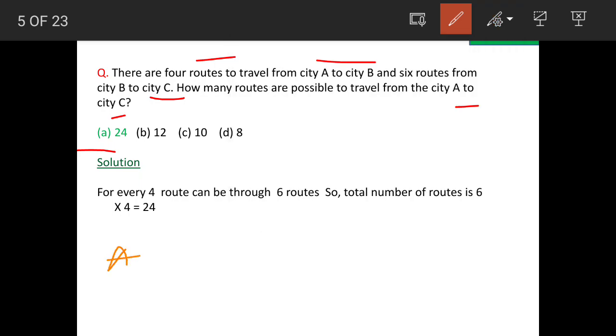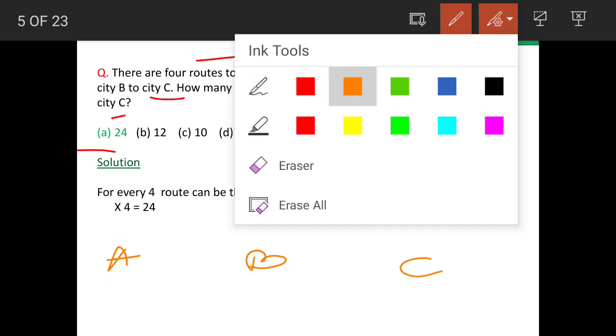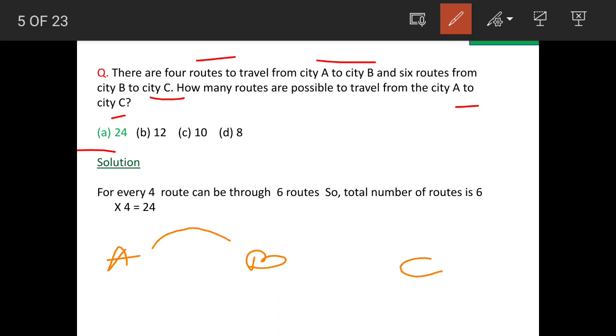Let us say this is city A, this is city B and this is city C. So, now A to B, how many routes are possible? 4: 1, 2, 3 and 4.